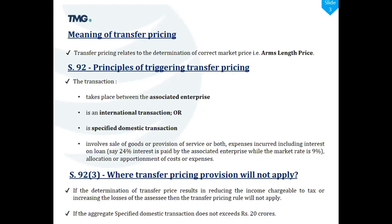Transfer pricing provisions will not apply in two circumstances under section 92(3). First, if the determination of a transfer price results in reducing the income chargeable to tax or increasing the losses of the assessee. For example, if a transaction was at 50 crores and the TPO determines the arm's length price is 40 crores — this would reduce income, so TP provisions will not apply. Second, for domestic transactions where the aggregate specified domestic transaction does not exceed rupees 20 crores.